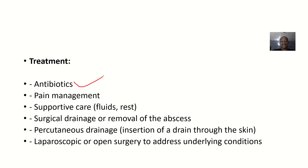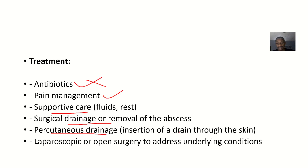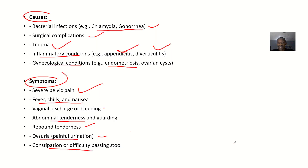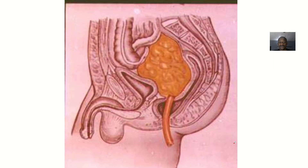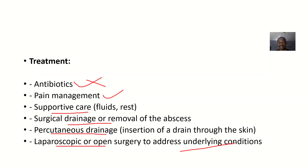For treatment, if infection is suspected or confirmed, antibiotics are administered to tackle the bacterial infection. Pain management and supportive care are also provided. The abscess can be surgically drained or removed. Percutaneous drainage involves inserting a drain through the skin to address the abscess. Laparoscopic or open surgery may be performed to address the underlying condition — for example, an appendectomy if appendicitis is the cause. That covers the types, causes, symptoms, and treatment of pelvic abscess.